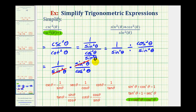So this simplifies to one divided by cosine squared theta. And since one over cosine theta is equal to secant theta, this simplifies nicely to secant squared theta.